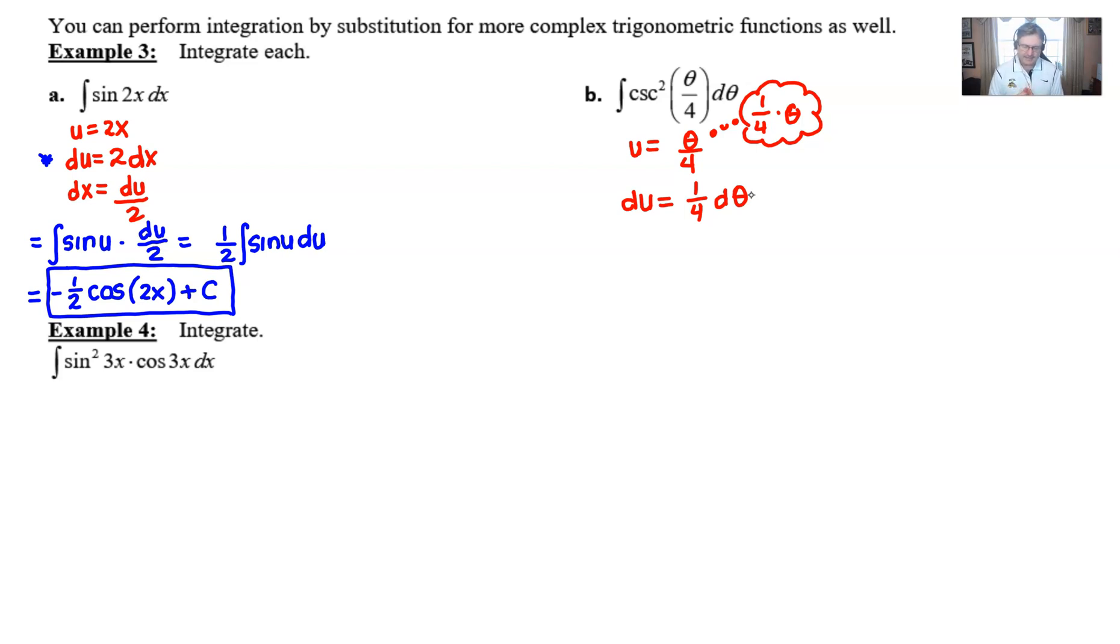As you can probably guess, if we want to get the d-theta by itself, we're going to multiply both sides by 4. And once d-theta is alone, it can get substituted out for 4 du, which means that 4 is just going to go to the front.